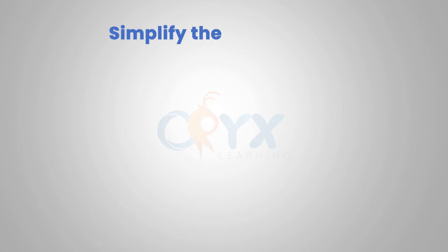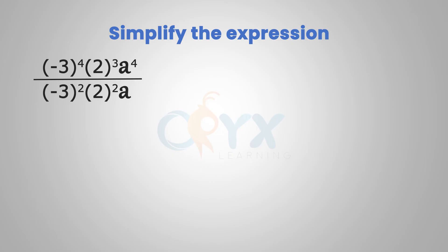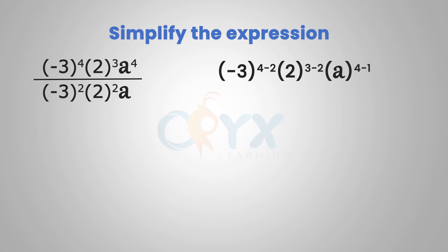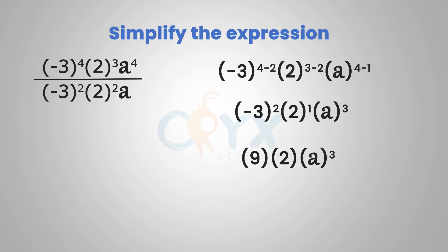Simplify the expression: negative 3 to the 4th times 2 to the 3rd times a to the 4th, divided by negative 3 squared times 2 squared times a. Using the quotient of powers property, with like bases we subtract the exponents. We have like bases of 3, 2, and a, so we subtract: 4 minus 2, 3 minus 2, and 4 minus 1. Remember, the exponent for a is 1 if not written. Simplifying, we get negative 3 squared times 2 to the 1st times a to the 3rd. Negative 3 squared is 9, 2 to the 1st is 2, and 9 times 2 gives us a final answer of 18a to the 3rd.